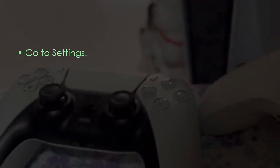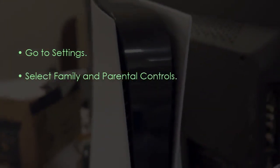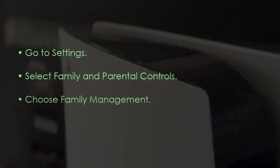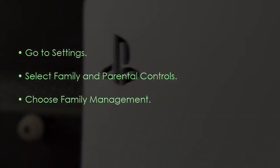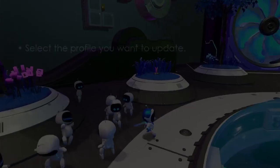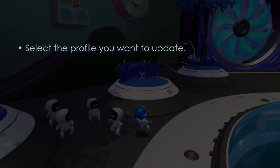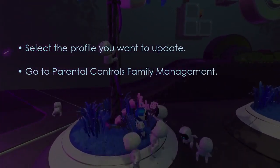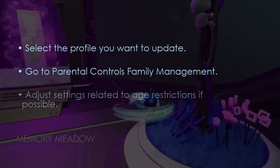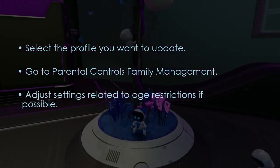The following step involves accessing Family Management settings. Open Settings, then select Family and Parental Controls. After that, choose Family Management. From there, adjust age restrictions — select the profile to update, then open Parental Controls and Family Management, and adjust age restriction settings if allowed.